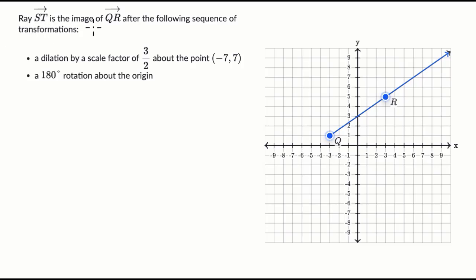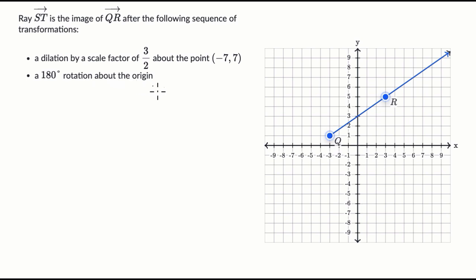We're told that ray ST is the image of ray QR after the following sequence of transformations: a dilation by a scale factor of three halves about the point negative seven comma seven, followed by a 180 degree rotation about the origin. What we want to do is figure out what ray ST looks like after these transformations. Pause this video and have a go at that before we do this together.